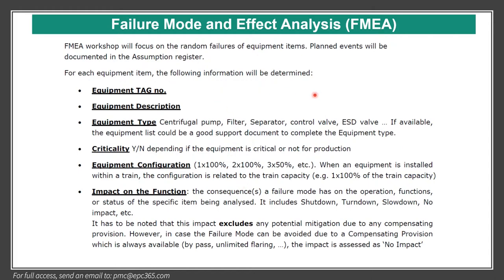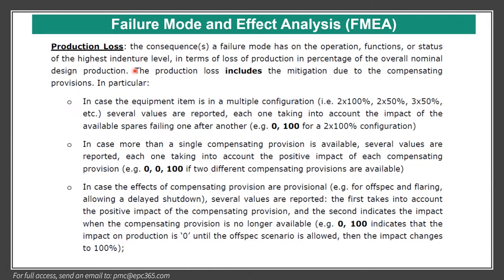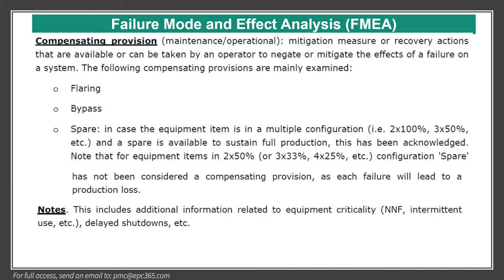For each equipment item, the following information will be determined: tag number, equipment description, equipment type — whether it is a pump, filter, or separator — criticality (yes or no, depending on whether the equipment is critical for production), equipment configuration and redundancy, and equipment on-function. Also production loss: the consequence of failure on operation functions in terms of loss of production as a percentage of overall normal design production. And compensation provisions — maintenance and operation mitigation measures or recovery actions available to negate or mitigate the effect of the failure — for example, flaring, bypass, and sphere.